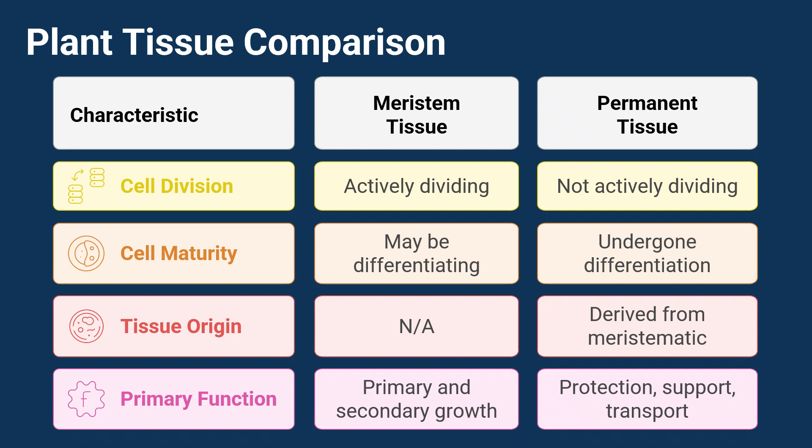To sum it all up, this comparison really shows the core differences between meristematic tissue — the busy growing cells — and permanent tissue — the specialized non-dividing cells. One's all about growth, and the other's about keeping the plant safe, strong, and well-fed.